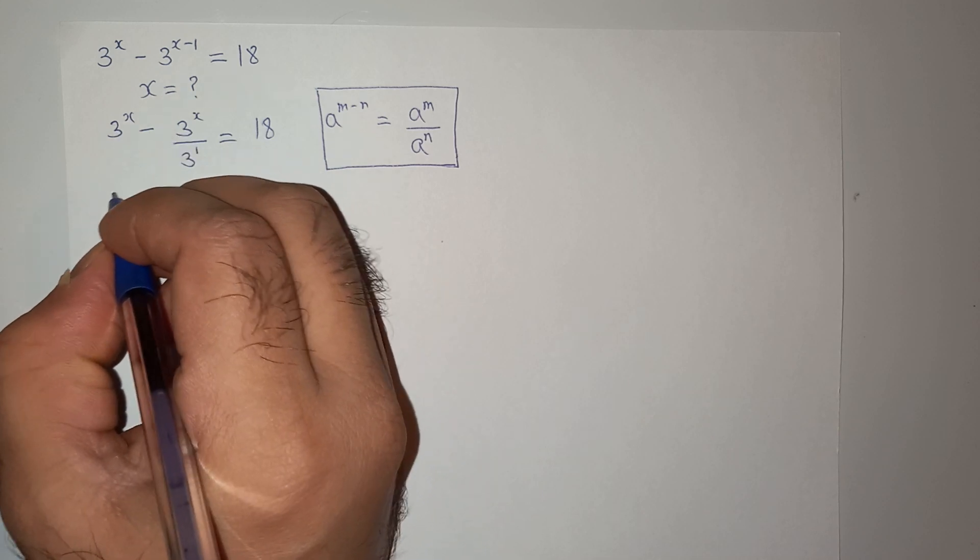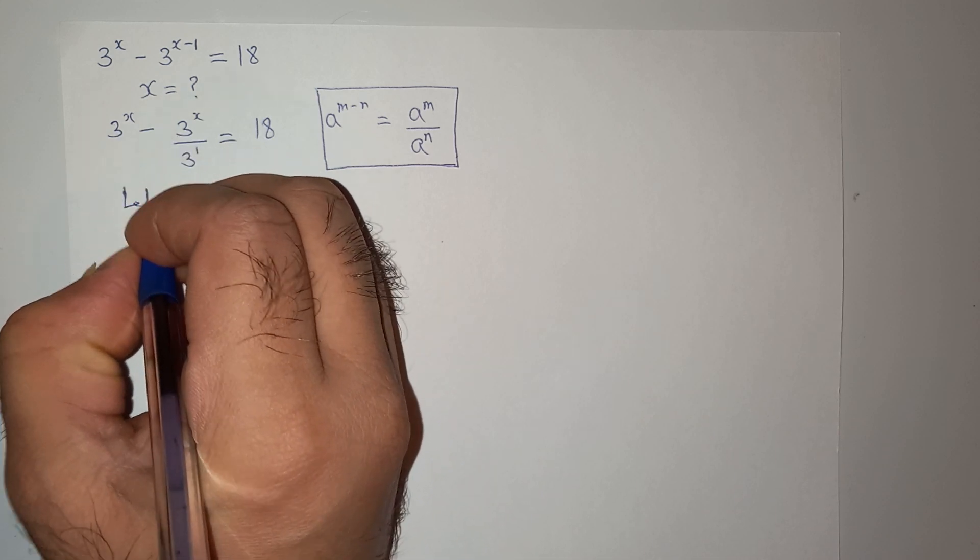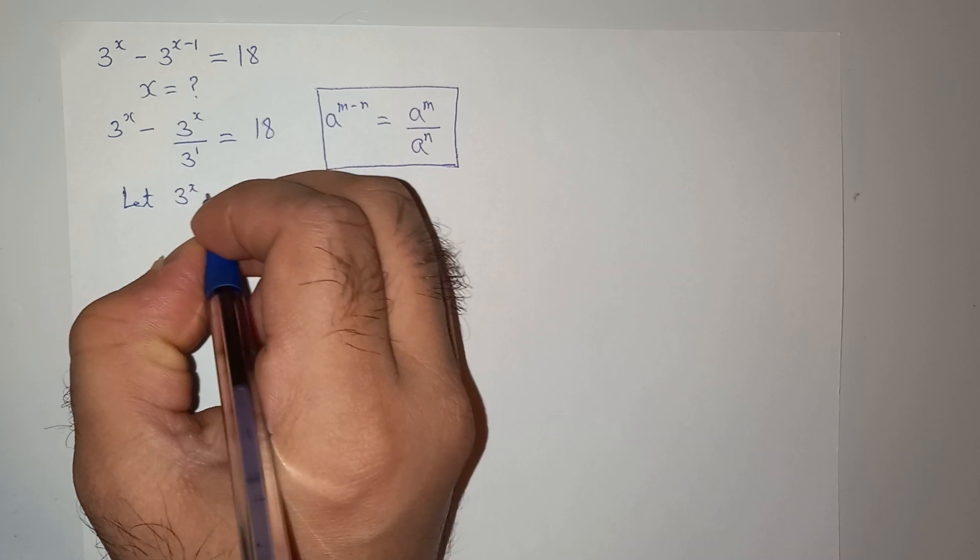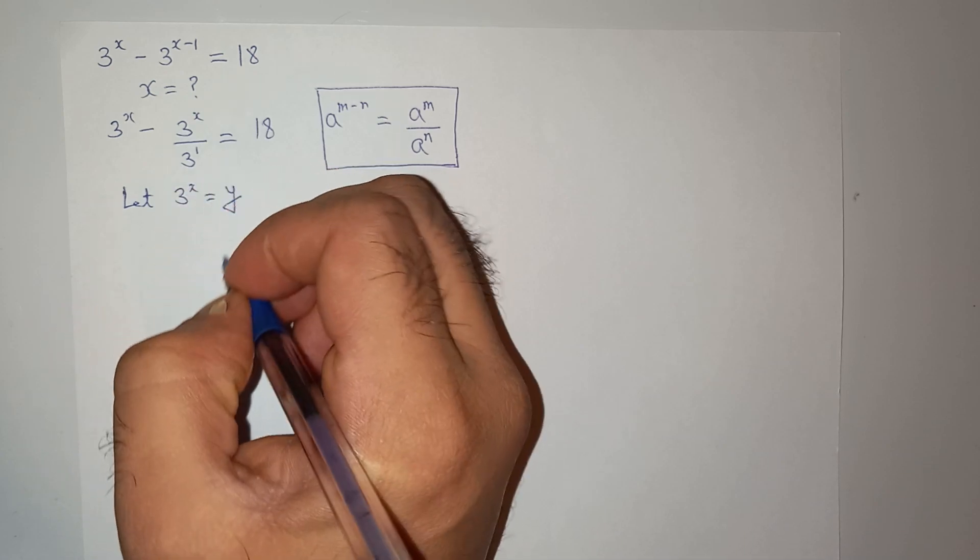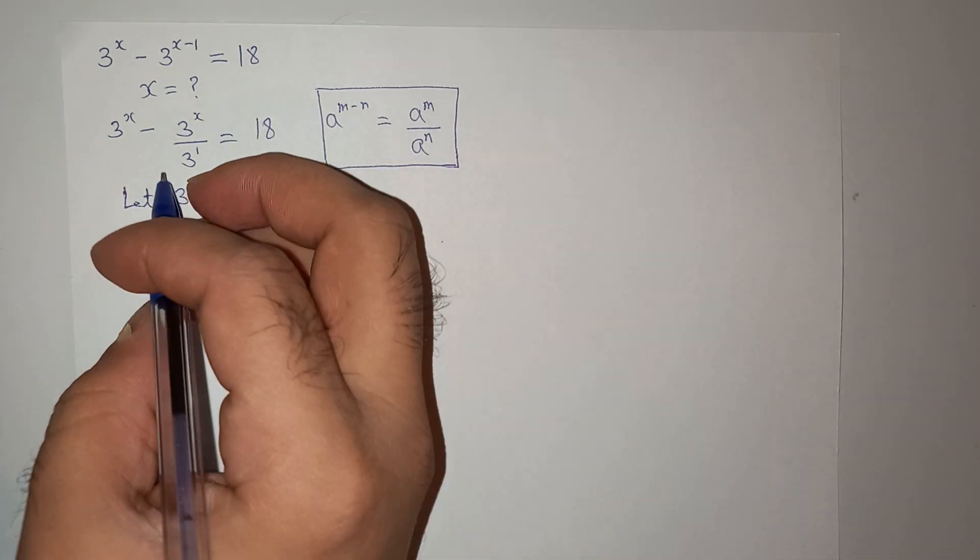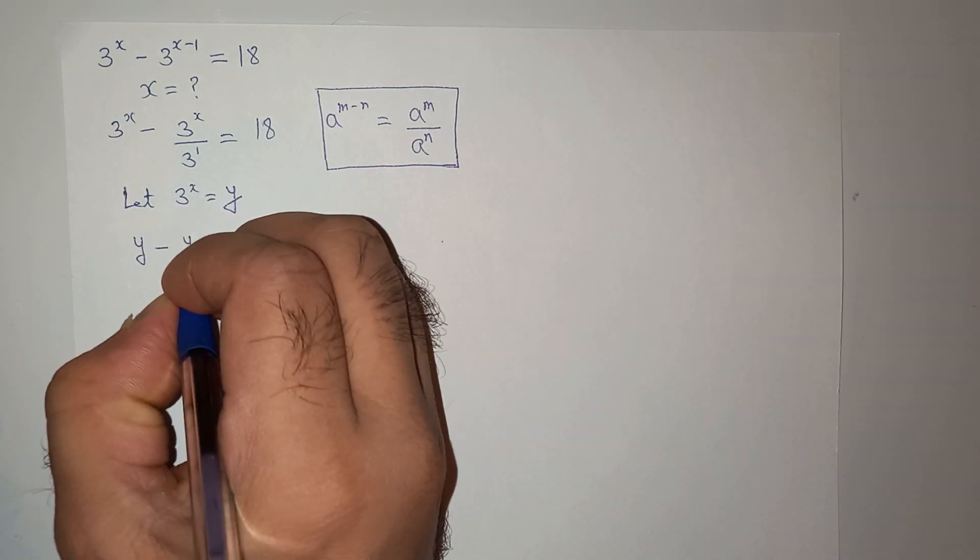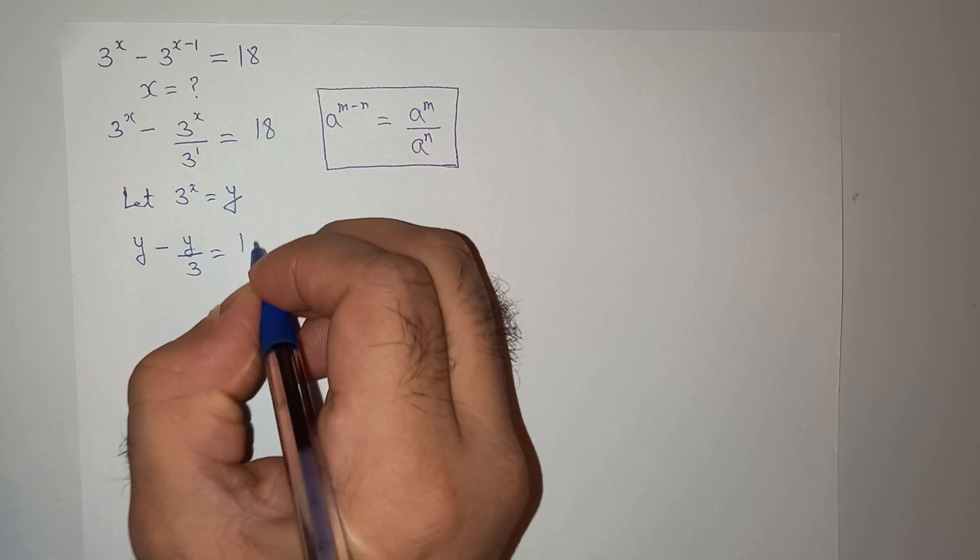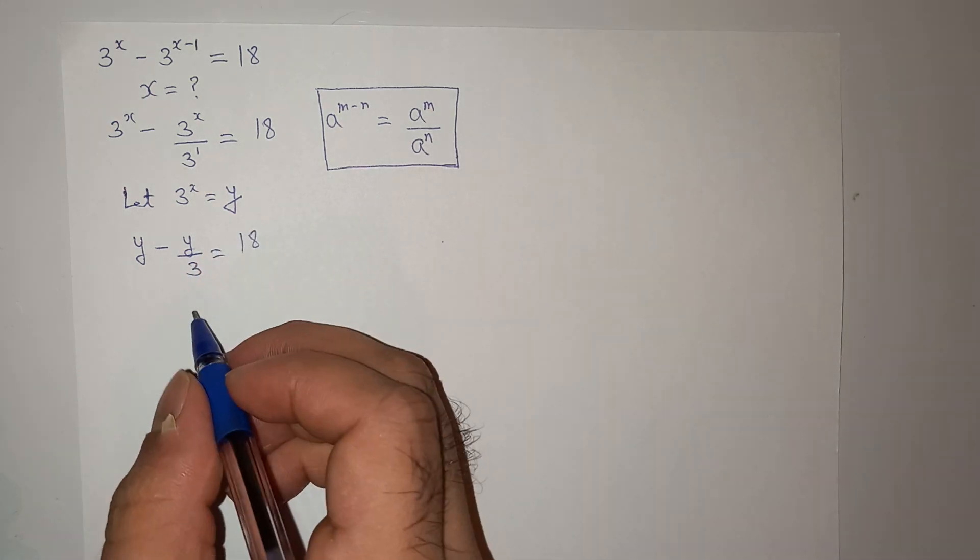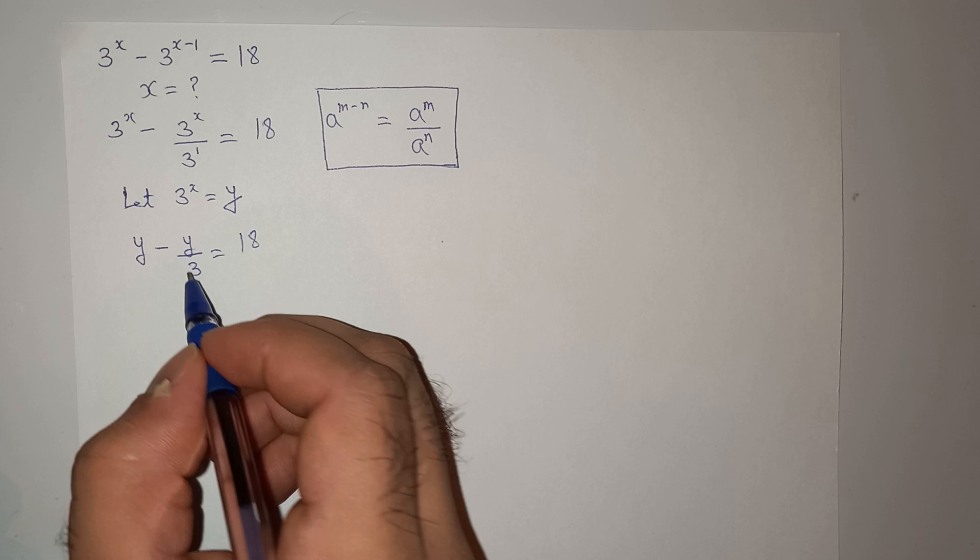So let us assume 3 power x equals to y. So this is going to be y minus y divided by 3 equals to 18. Now this is a pretty simple equation to solve.